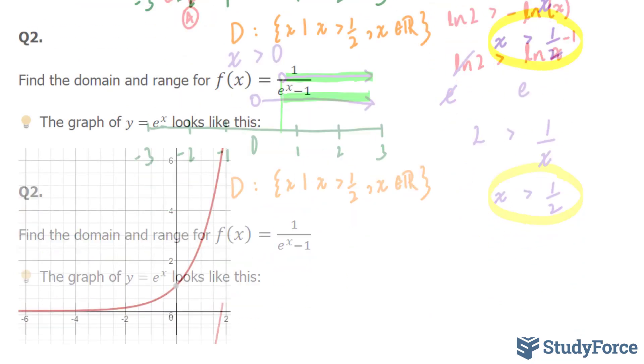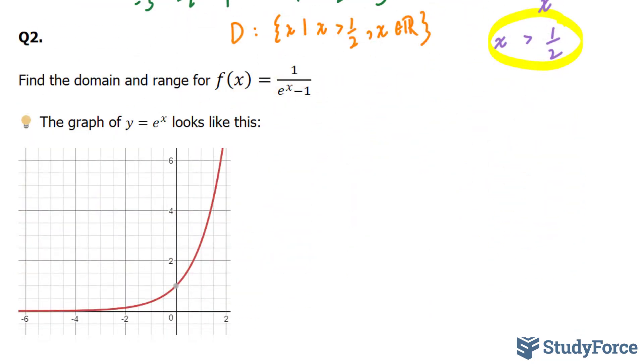Let's move on to question two. In question number two, they're asking us to find the domain and range for f(x) is equal to 1 over e to the power of x minus 1.